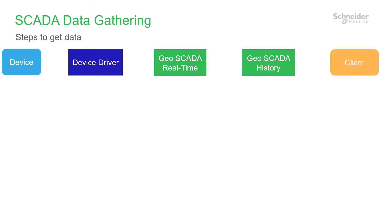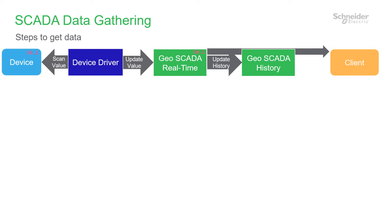A simple view of SCADA systems goes like this. The SCADA device driver reads a value from a device such as an RTU, PLC or OPC server, and then it writes it to the SCADA database. It also gets written to the SCADA historian. Then the SCADA client displays the new data on the screen.